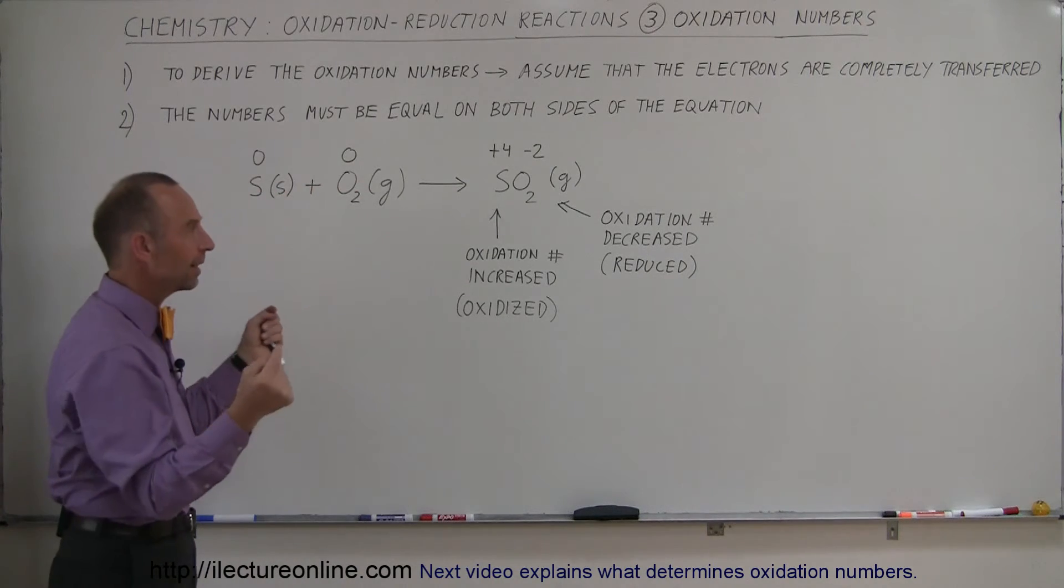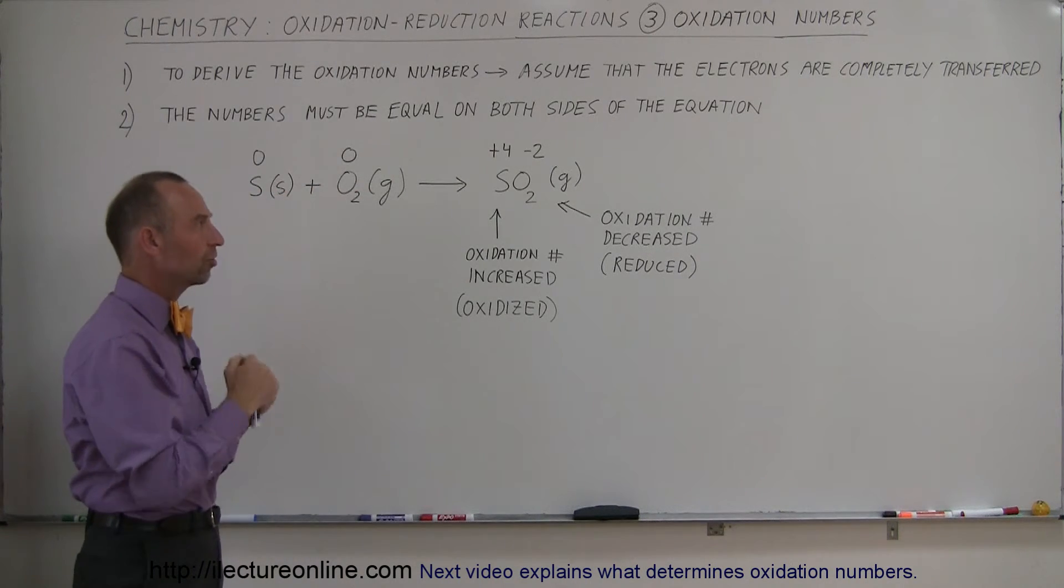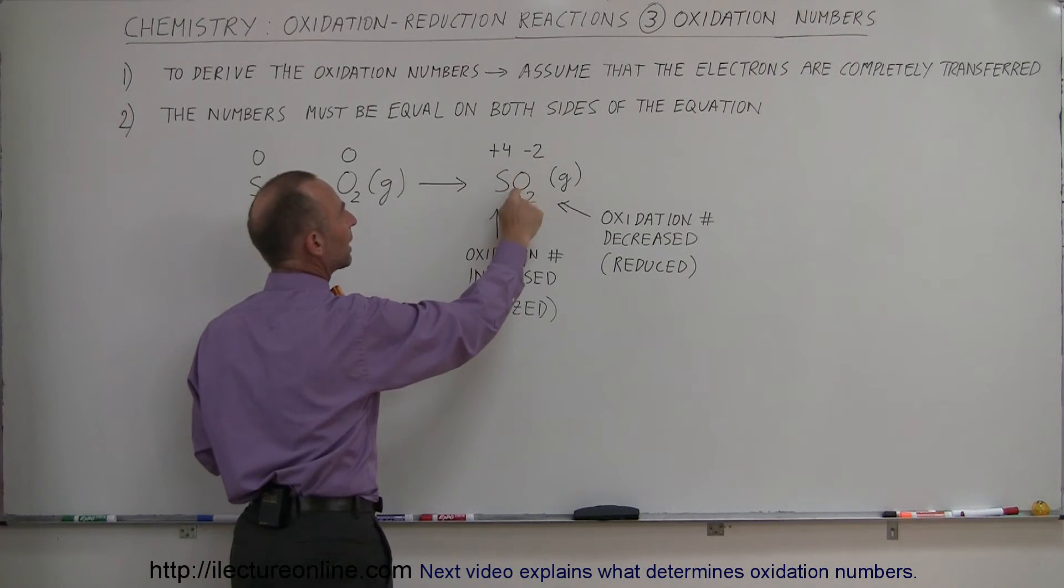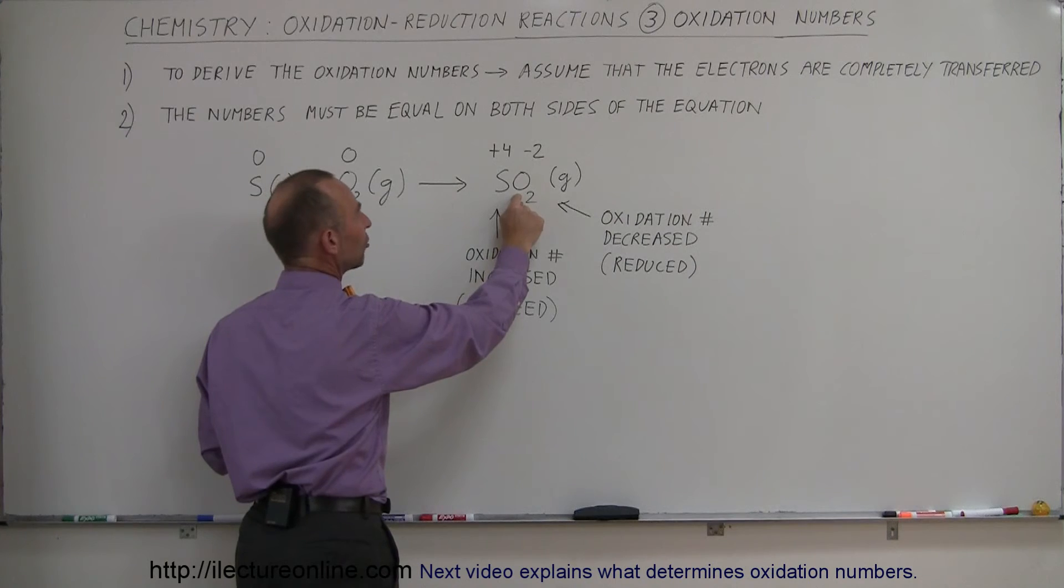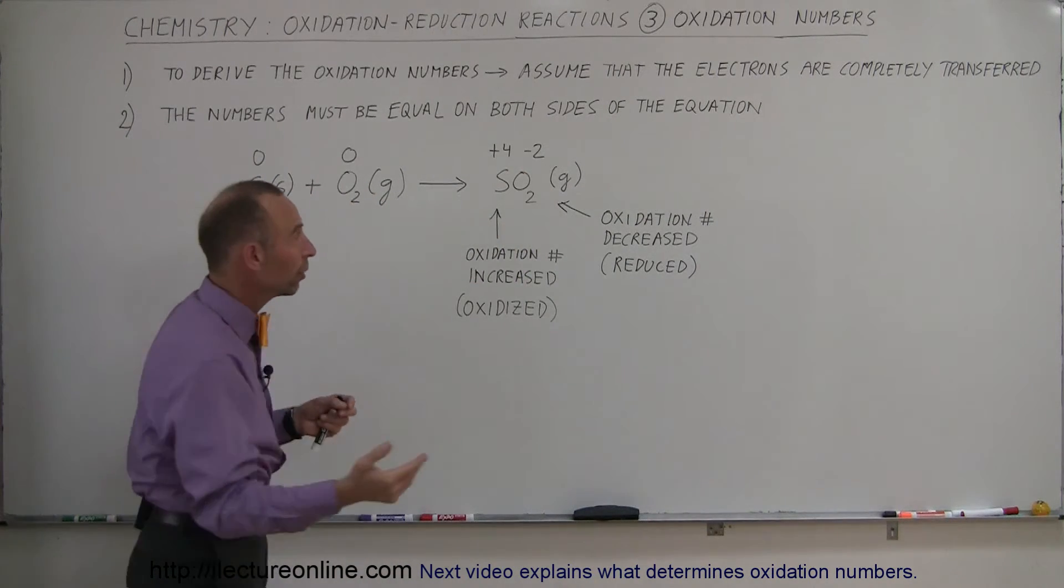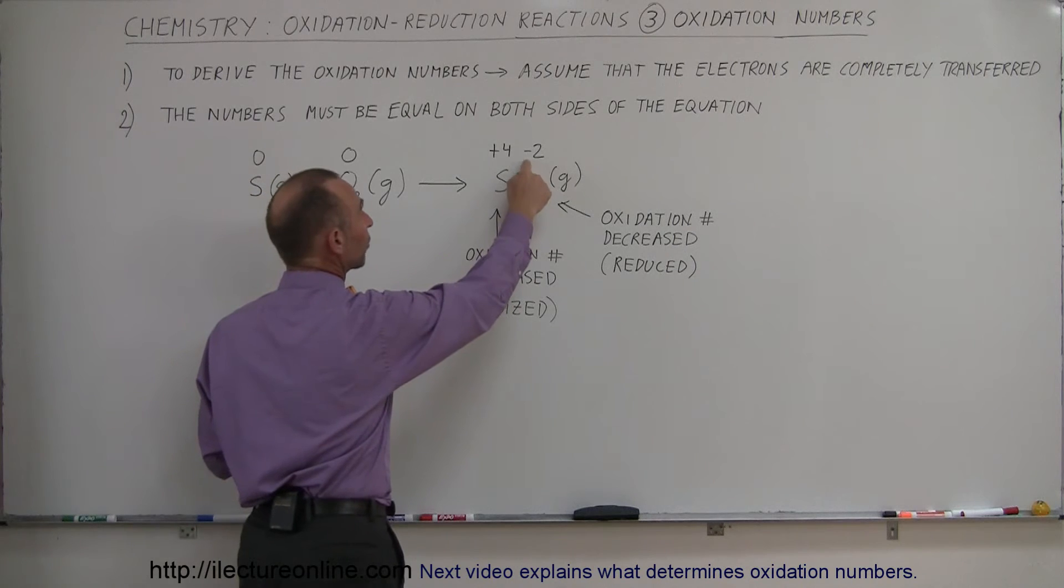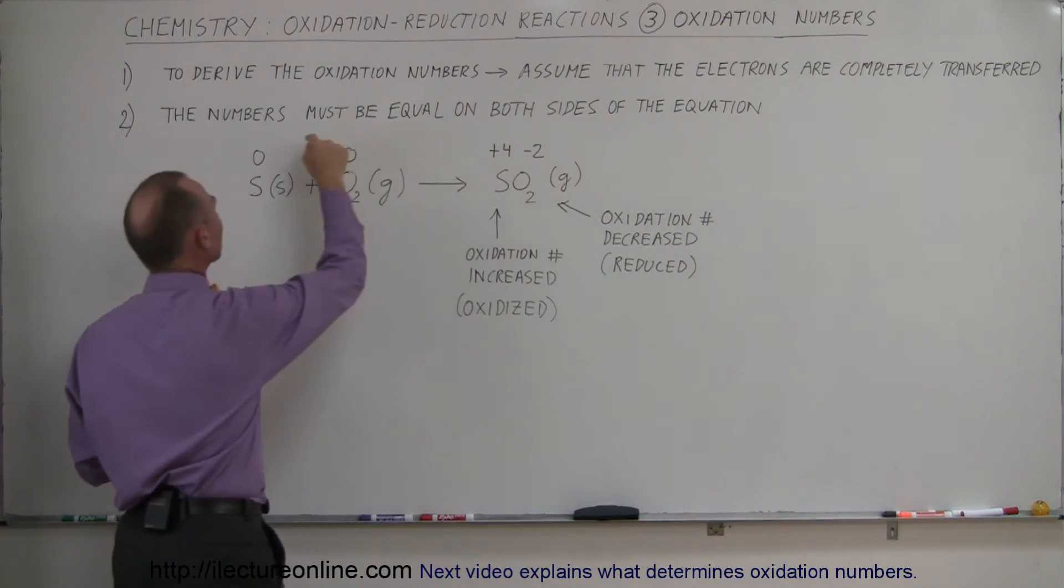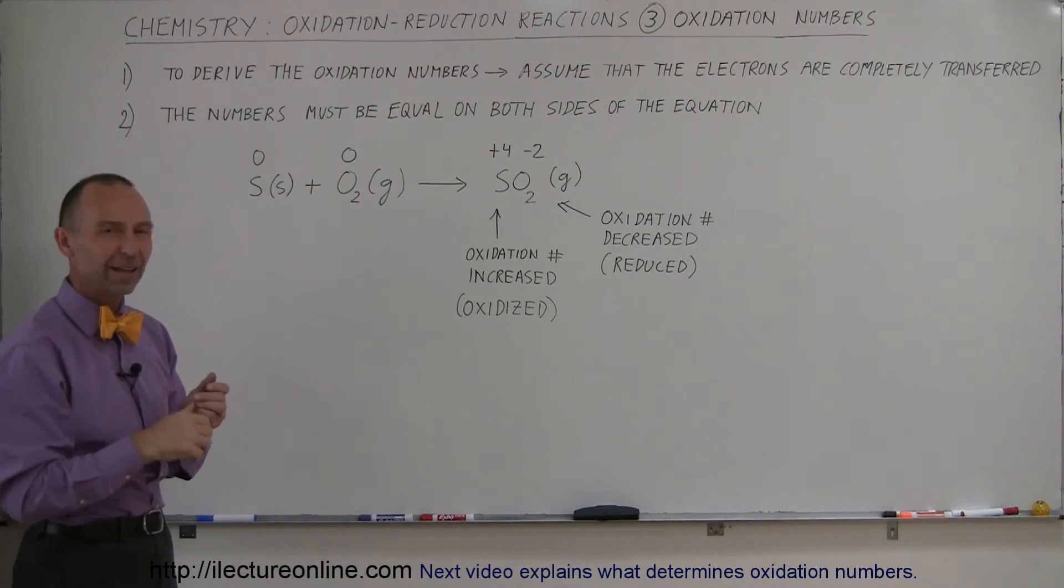Since sulfur is bonded with two oxygen atoms, each oxygen atom has received two of those four electrons. So each oxygen atom's oxidation number now becomes minus two. Since there's two of them, two times minus two gives you minus four, and the plus four and minus four together gives you zero, which is equal to the oxidation number sum on the left side of the equation.